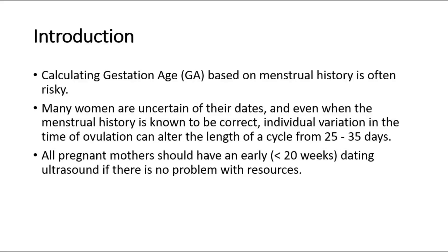Calculating gestational age based on menstrual history is often risky. Many women are uncertain of their dates, and even when the menstrual history is known to be correct, individual variation in the time of ovulation can alter the length of a cycle from 25 to 35 days.